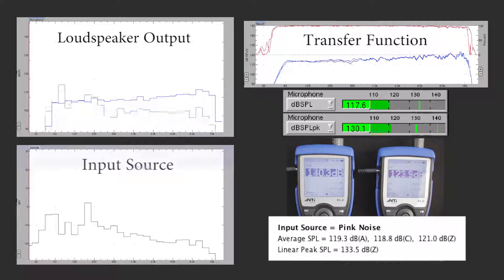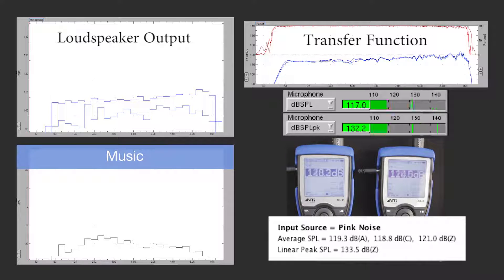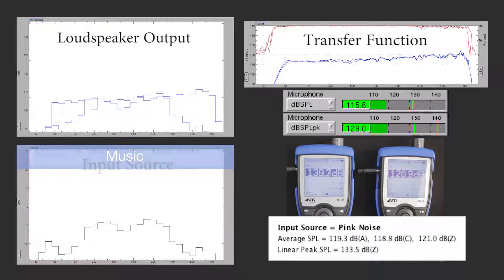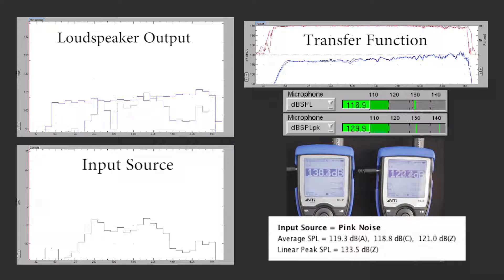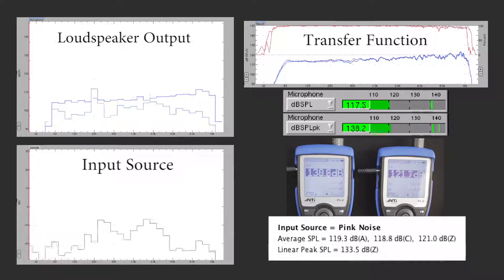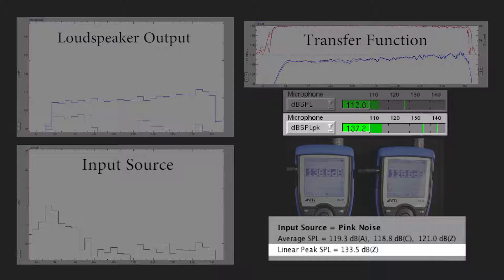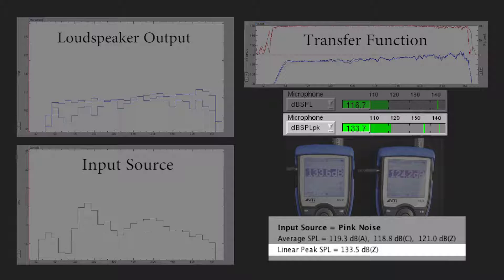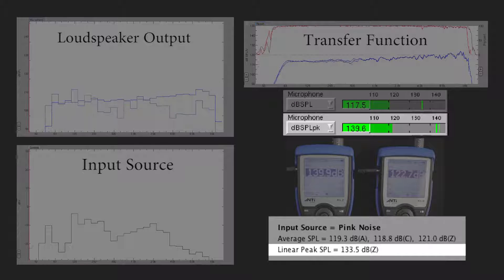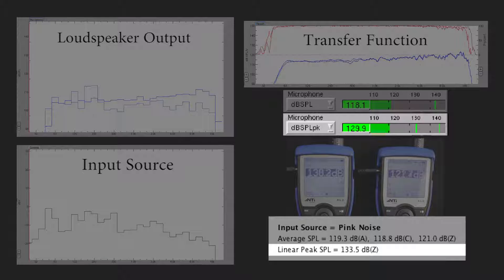The peak-to-average ratios in music are different from pink noise and vary from moment to moment and from one song to another. With this particular segment of music, the loudspeaker reproduces peak values that exceed either dataset presented in MAP, while maintaining highly linear output.